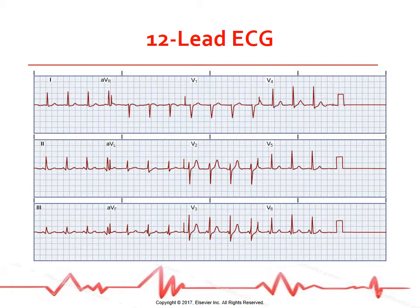Six of the leads measure electrical forces in the frontal plane. These are bipolar leads 1, 2, and 3, and unipolar positive leads AVR, AVL, and AVF. The remaining six unipolar leads, V1 through V6, measure the electrical forces in the horizontal plane.